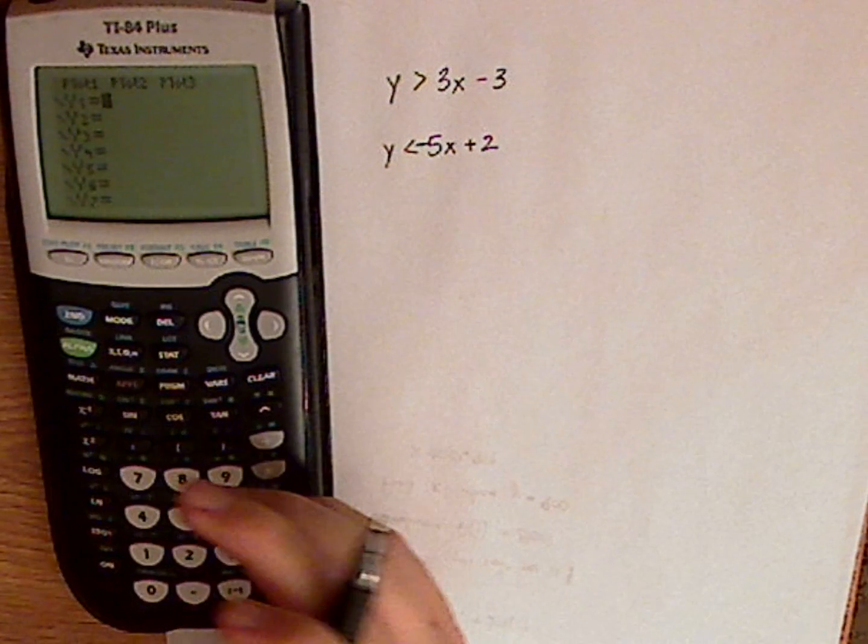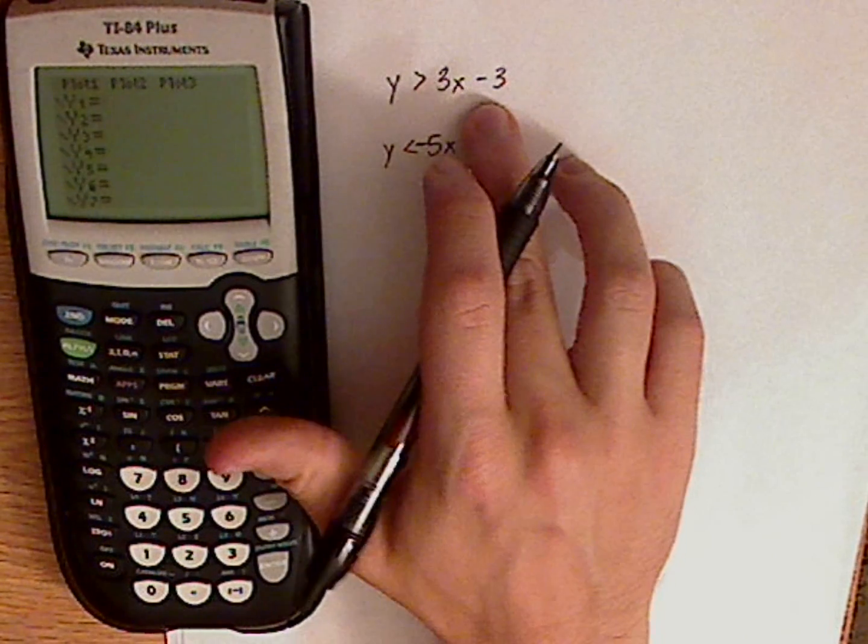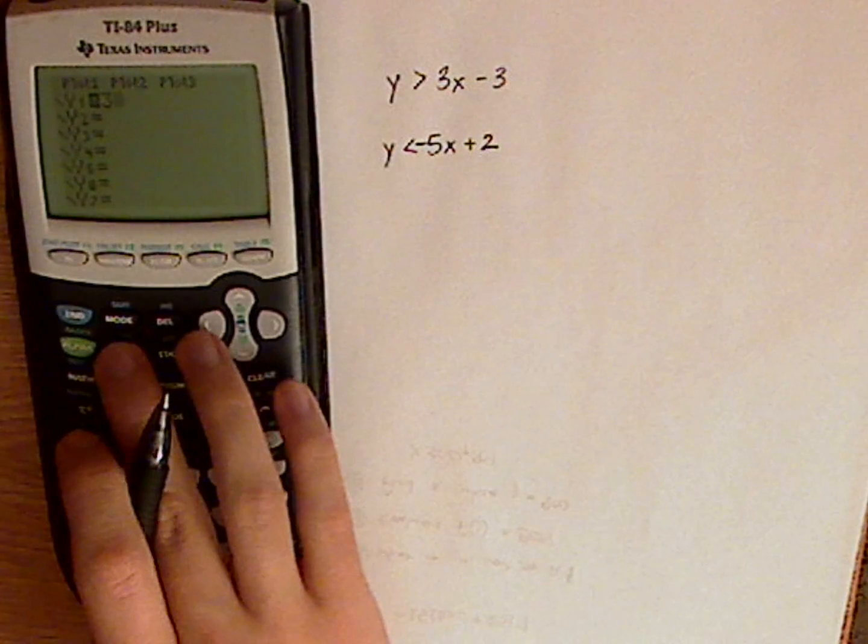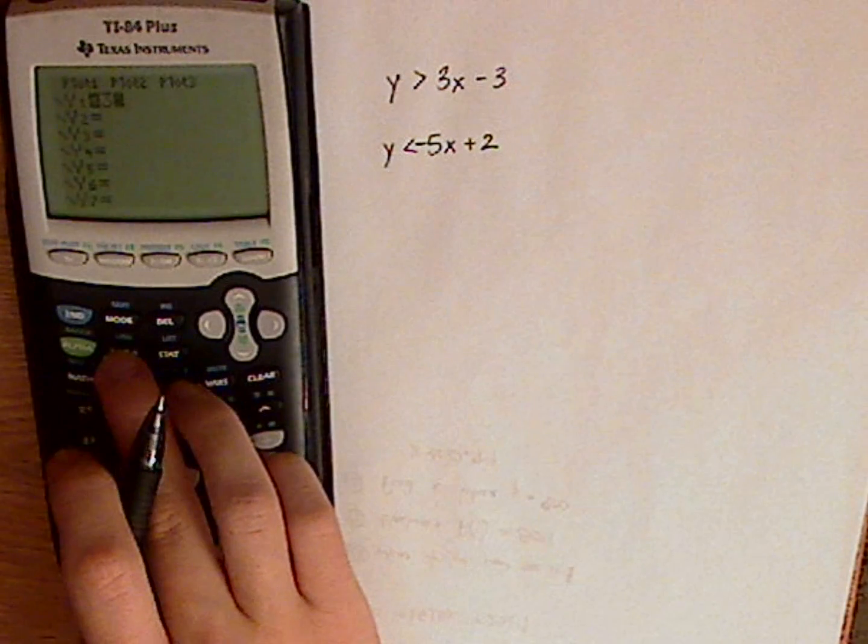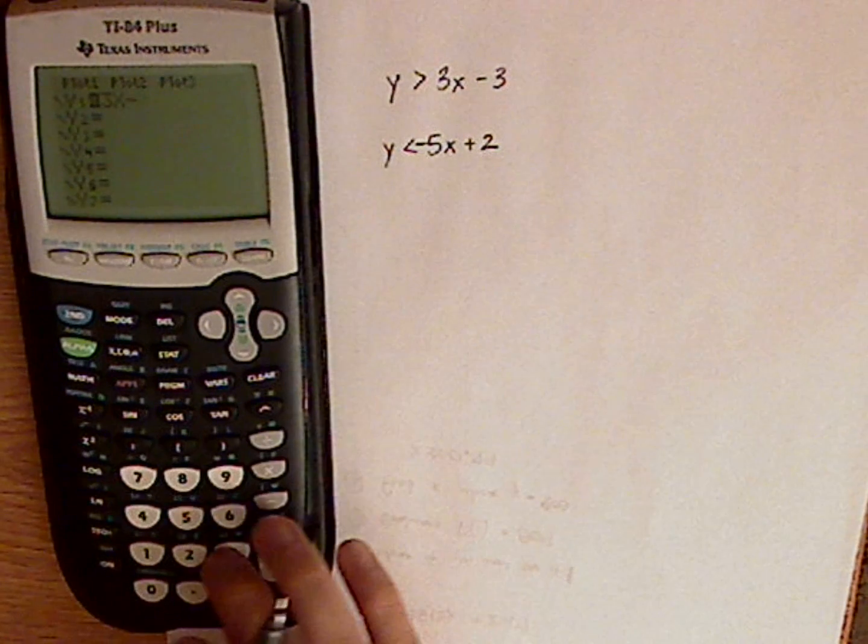First, go to y equals. Now just type in as they are. So 3, and then for your variable x, you want to push the variable button, gives you x, minus 3.